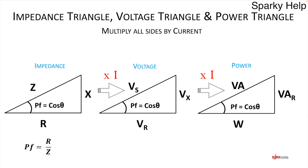Going back to the first triangle: it's adjacent over hypotenuse because it's a cosine — in this case R over Z. That's the one most people tend to remember. It's interesting: when students are told to work out power factor, they'll go straight to R over Z, but if you mention trigonometry they switch off. You're doing the same thing — it's just called power factor instead.